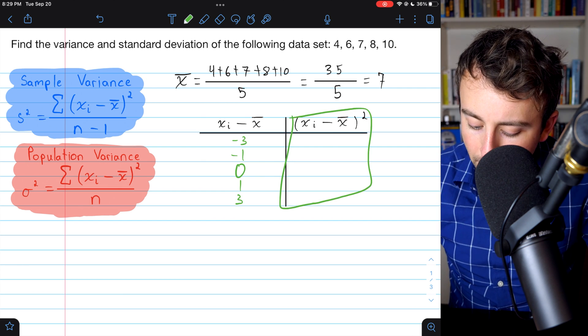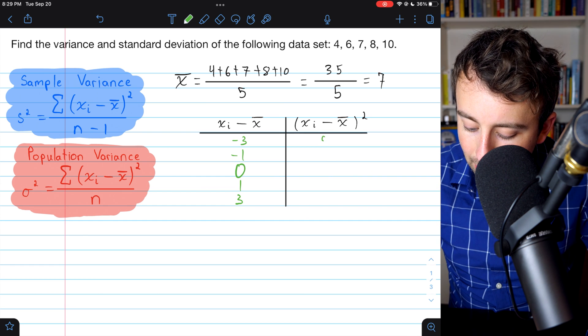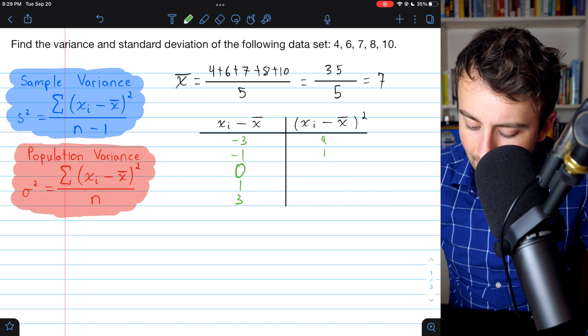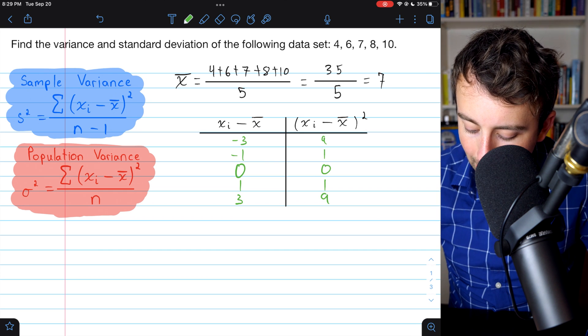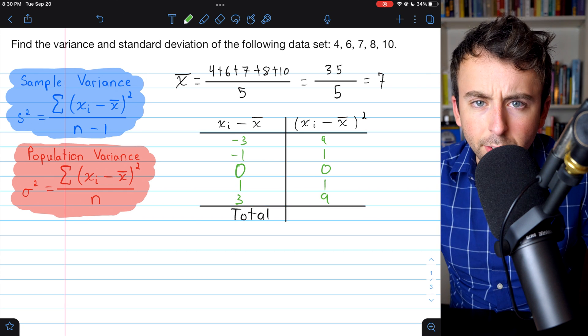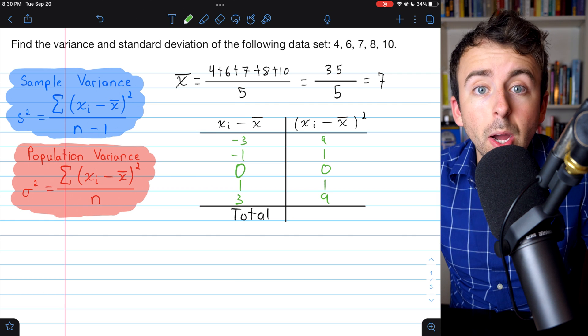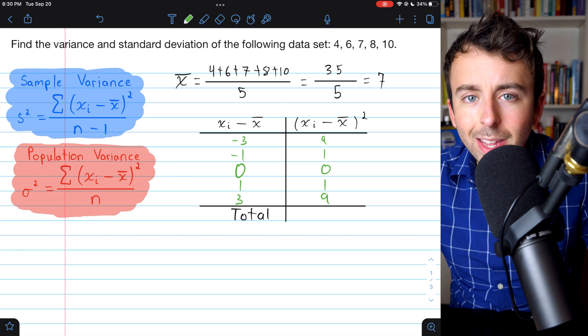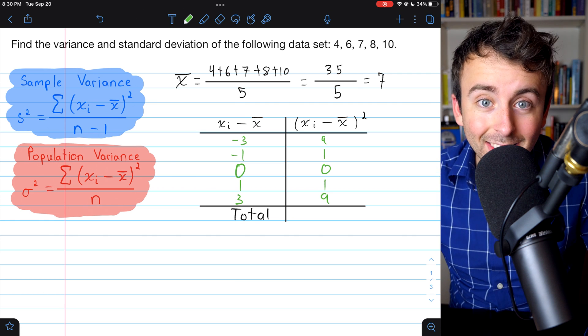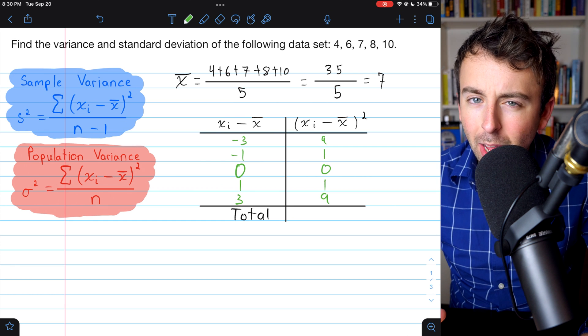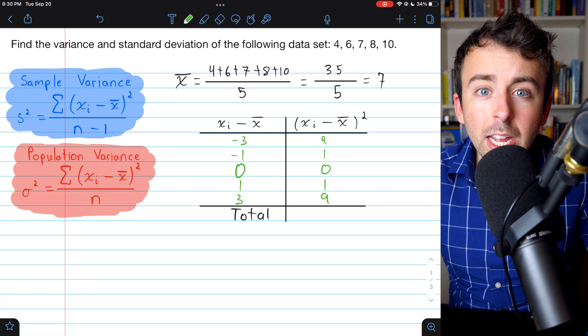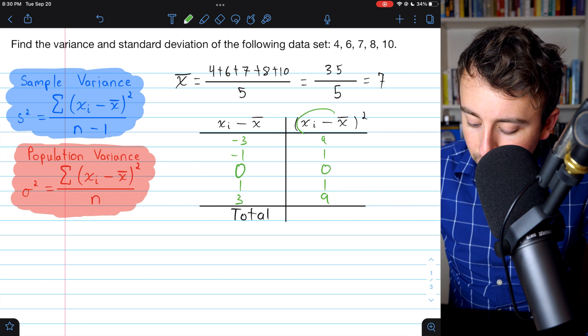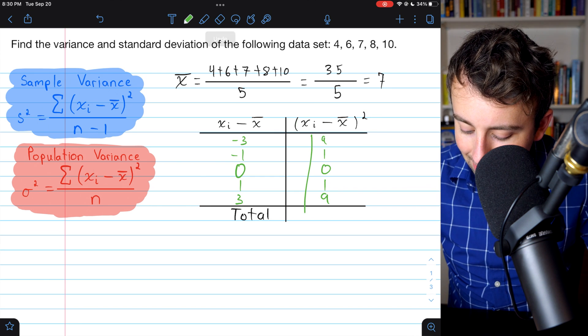And then in the right column, we just have to square all of these differences. So negative 3 becomes 9. Negative 1 squared is 1. 0 squared is 0. 1 squared is 1. 3 squared is 9. There we go. I'll leave a link in the description to a lesson where I talk about where this formula comes from, if you're interested in that. In this video, in the interest of time, I'm just focusing on the process. So now we've got the differences from the mean squared. That's in this column.